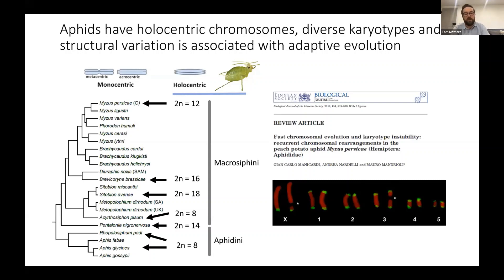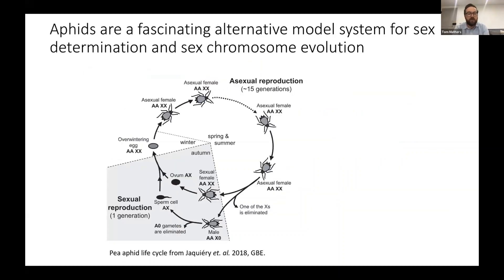Some of this variation is associated with adaptive evolution — some chromosome rearrangements in Myzus persicae have been associated with the evolution of insecticide resistance. Aphids also have a fascinating life cycle: throughout spring and summer they reproduce predominantly asexually, giving birth to live offspring with around 15 generations per season. Then as the day length shortens, they produce sexual individuals by losing one copy of their X chromosome, giving them an XX/XO sex determination system.